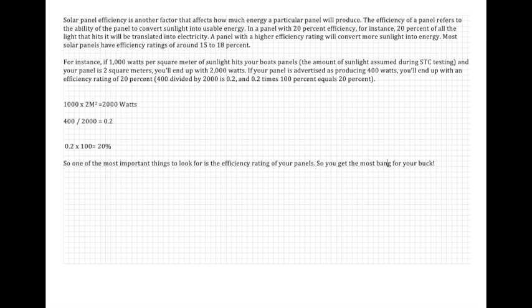So how do we work out what the efficiency is? Well, there's an international standard of solar panels. For instance, if a thousand watts per square meter of sunlight hits your boat panels, the amount of sunlight assumed during an STC testing, and your panel is 2 square meters, you'll end up with 2000 watts. If your panel is advertised at producing 400 watts, you'll end up with an efficiency rating of 20%. Here's the maths.